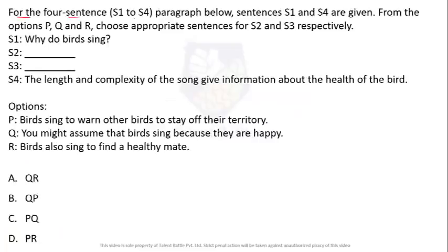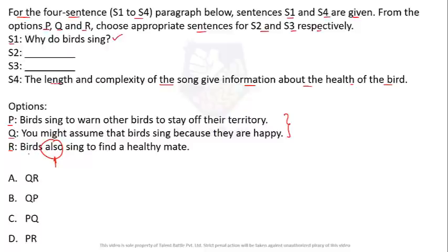For sentences S1 to S4, S1 and S4 are given; choose appropriate sentences for S2 and S3 from options P, Q, R. S1: 'Why do birds sing?' S4: 'The length and complexity of the song give information about the health of the bird.' Options: P — birds sing to warn other birds to stay off their territory; Q — you might assume that birds sing because they are happy; R — birds also sing to find a healthy mate.